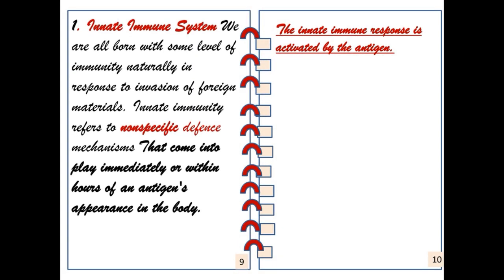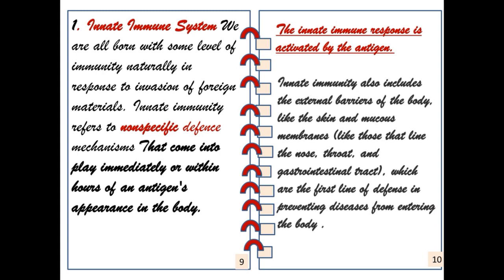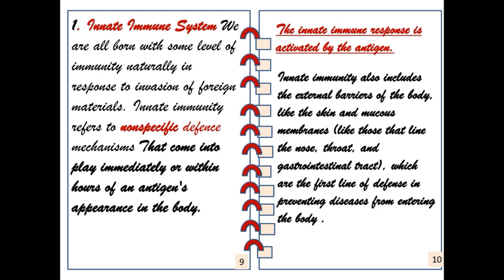We are all born with some level of immunity naturally in response to invasion of foreign materials. Innate immunity refers to nonspecific defense mechanisms that come into play immediately or within hours of an antigen's appearance in the body. Innate immunity also includes external barriers of the body like the skin and mucous membranes like those that line the nose, throat, and gastrointestinal tract, which are the first line of defense in preventing diseases from entering the body.